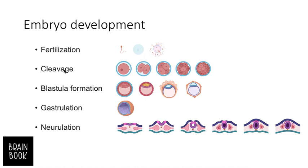After fertilization we have a cleavage stage, where the zygote is divided internally to form different cells. Then we have blastula formation, followed by gastrulation, and then a stage called neurulation. We will exclusively focus on neurulation because we are studying neurobiology and neuroscience.